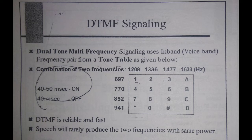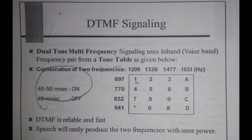Dual tone multi-frequency means that from the row and column side, for each particular number there is always a frequency for dialing a particular digit. When you press a particular number, a combination of two frequencies as shown in the figure is generated for a period of time — 40 to 50 milliseconds on and 40 milliseconds off. The advantages of DTMF are that it is reliable and fast. Also, speech will rarely produce two frequencies with the same power, so it has very little impact on speech.